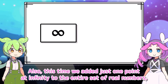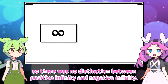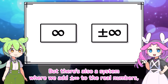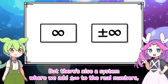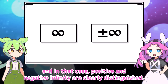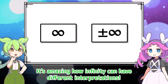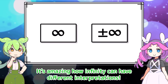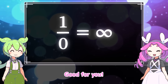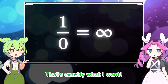This time we added just one point at infinity to the entire set of real numbers, so there was no distinction between positive infinity and negative infinity. But there's also a system where we add positive or negative infinity to the real numbers, and in that case positive and negative infinity are clearly distinguished. It's amazing how infinity can have different interpretations.